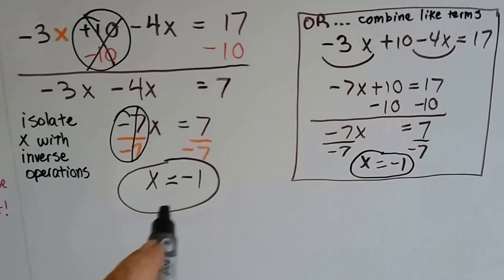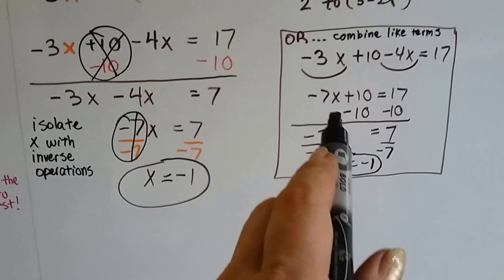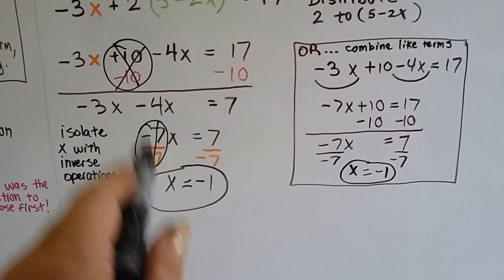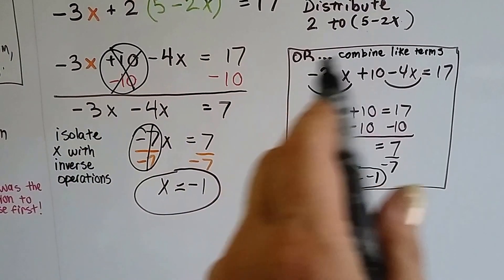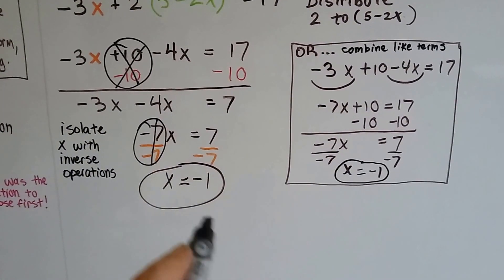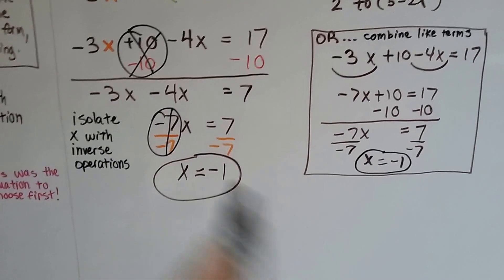So either way we would have gotten a negative 1 whether we combined like terms or just started subtracting or adding as inverse on each side. It's just easier to combine like terms sometimes because you'll seem to go a little quicker. But we know x is equal to negative 1 now, don't we?